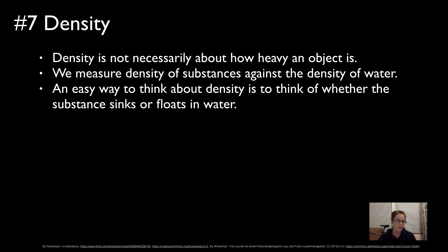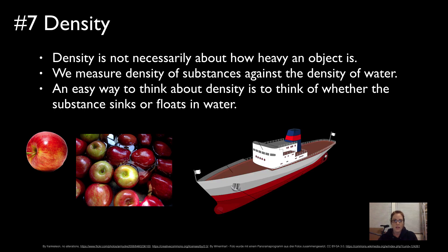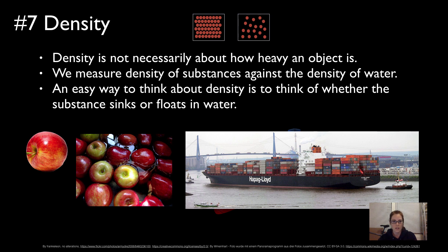The density of water is the standard against which we measure all other densities, so it's easy to think in terms of whether something floats or sinks in water. Apples float, so we can say apples are less dense than water. What about ships? They're made of lots of metal — things we'd normally think would sink — yet a ship and all its contents floats. So a ship has to be less dense than water. It has to do with how much stuff is packed into the ship relative to the size it takes up, so it floats on water.